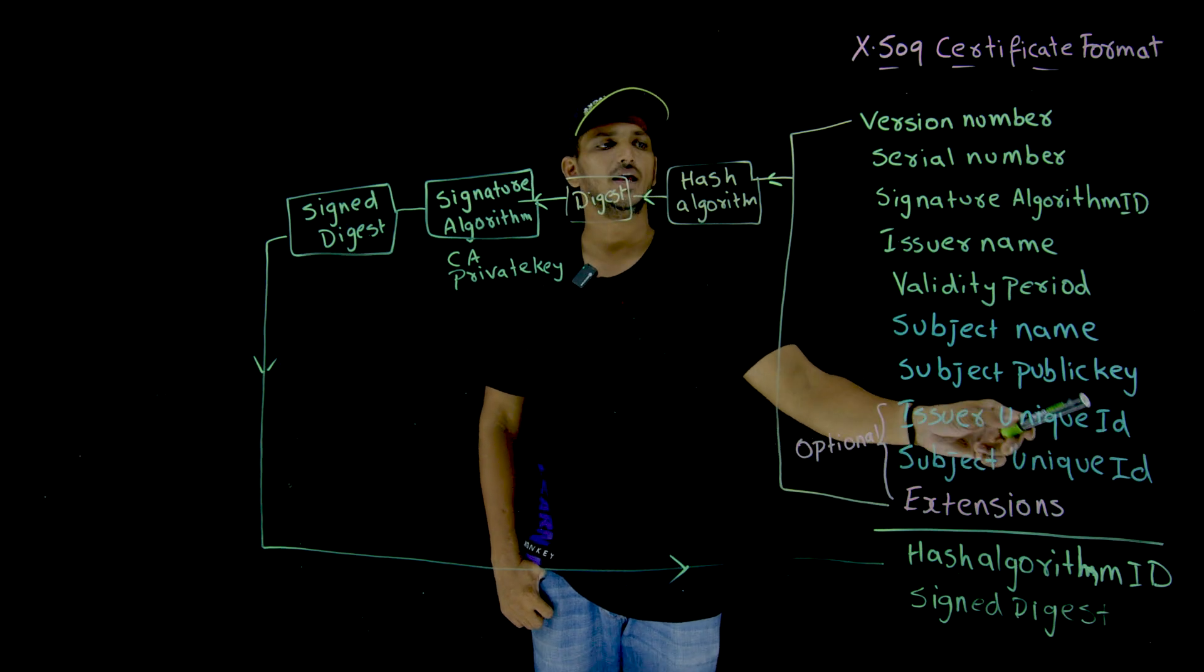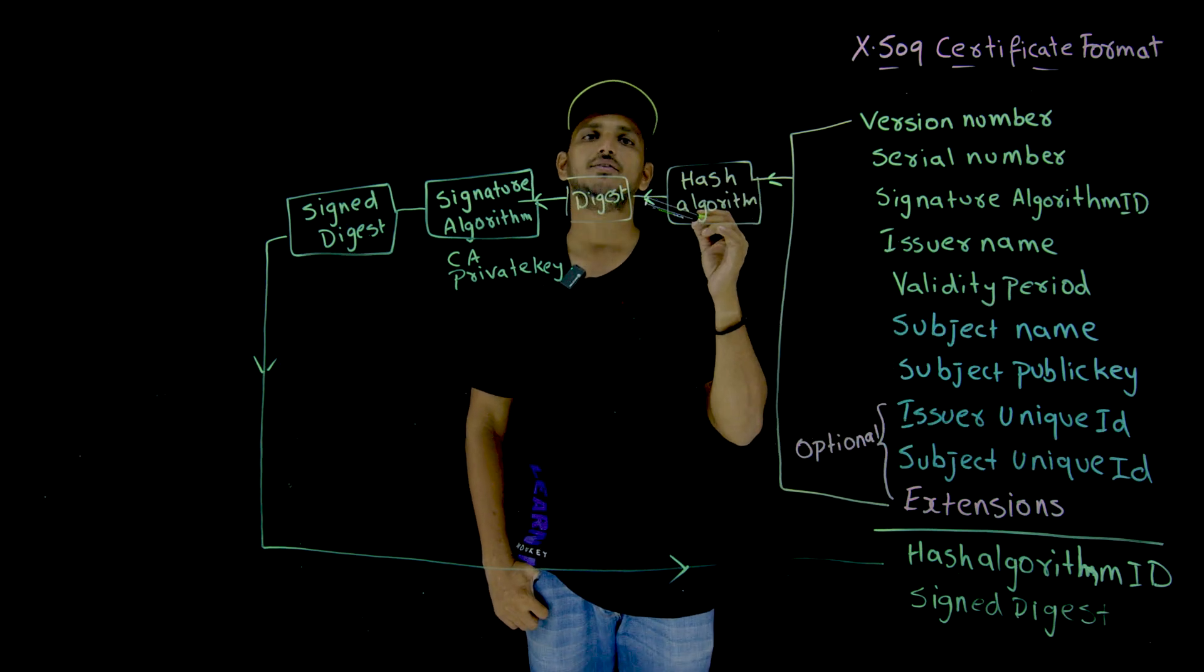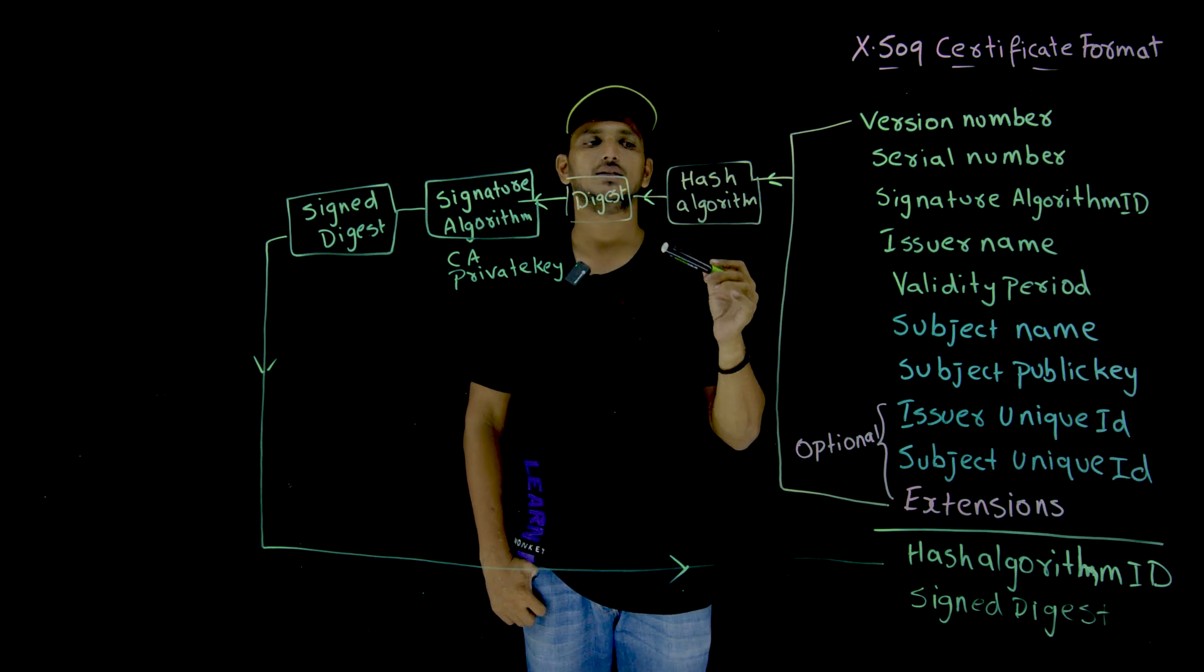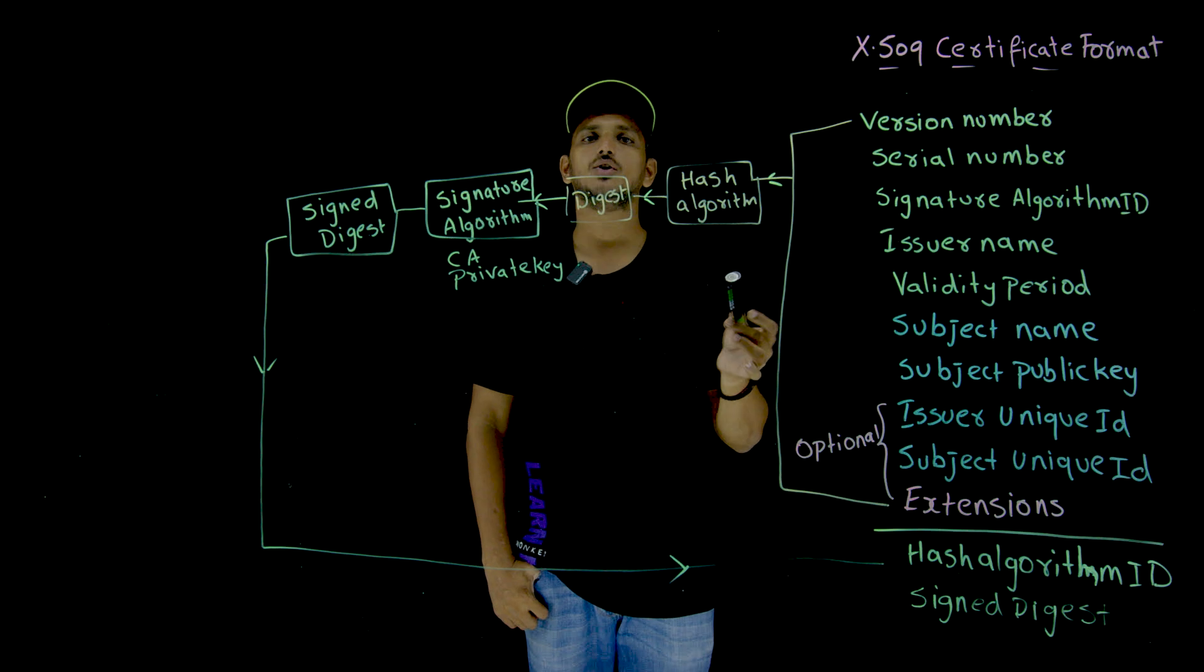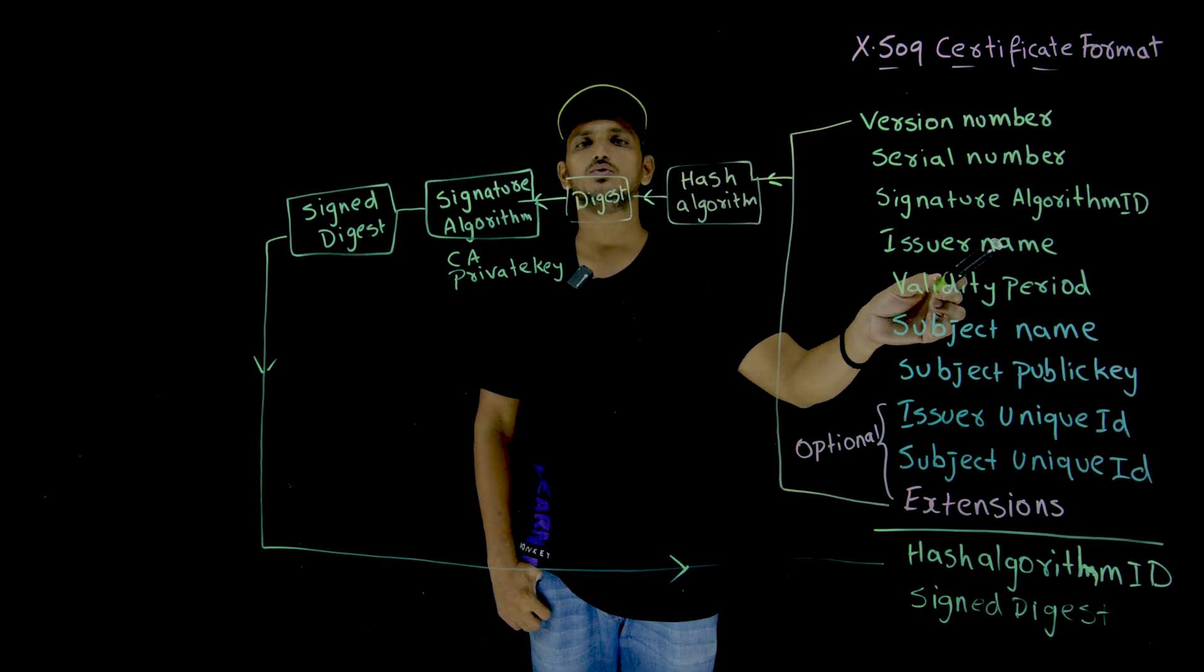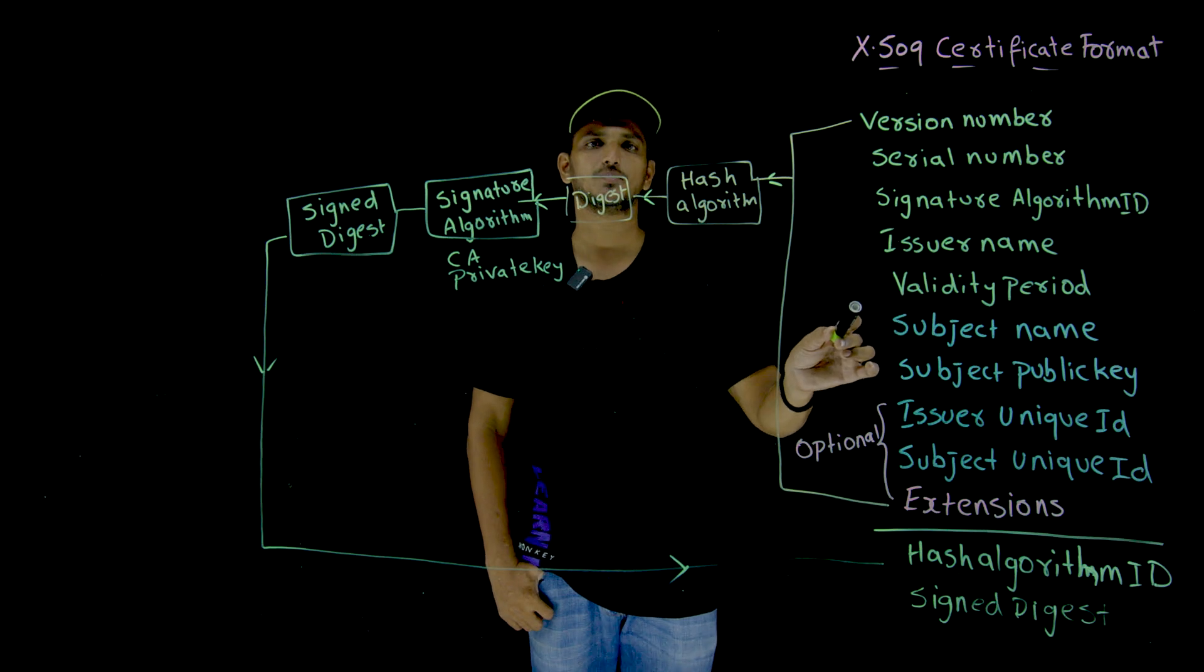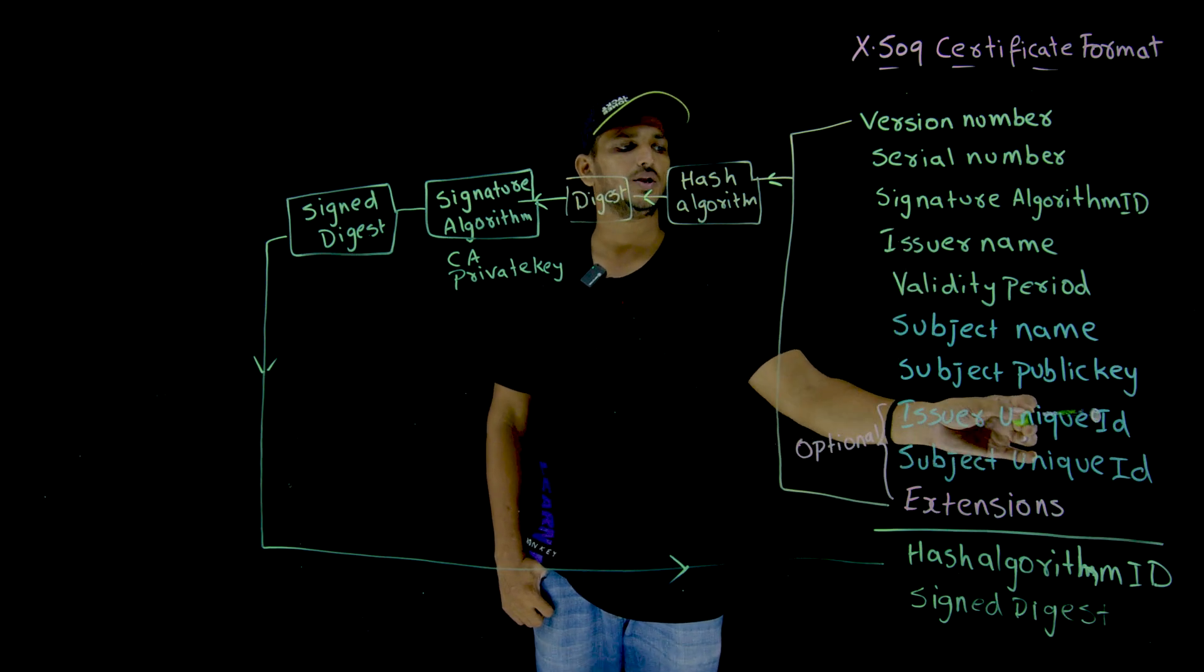Issuer unique ID. Each issuer means GoDaddy is having a unique identification number. See, these are the optional fields, GoDaddy, the issuer name is okay, that's enough. In order to provide extra security, and sometimes issuers are going to use the same domain name for multiple purposes. In those situations, we are going to use issuer unique ID.